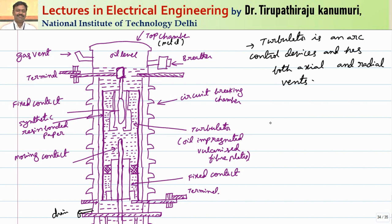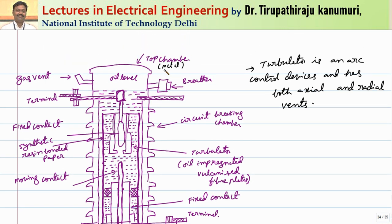Coming to the construction of the circuit breaker, it basically contains three chambers. The first is the top chamber, made of metal, which contains a gas vent and a breather so that whenever high pressure gas is produced, it can easily escape through the gas vent. This top chamber is connected to the circuit breaking chamber. The circuit breaking chamber is made of porcelain on the outer side, and inside the porcelain, one more cylinder of synthetic resin bonded paper is provided to give extra insulation.